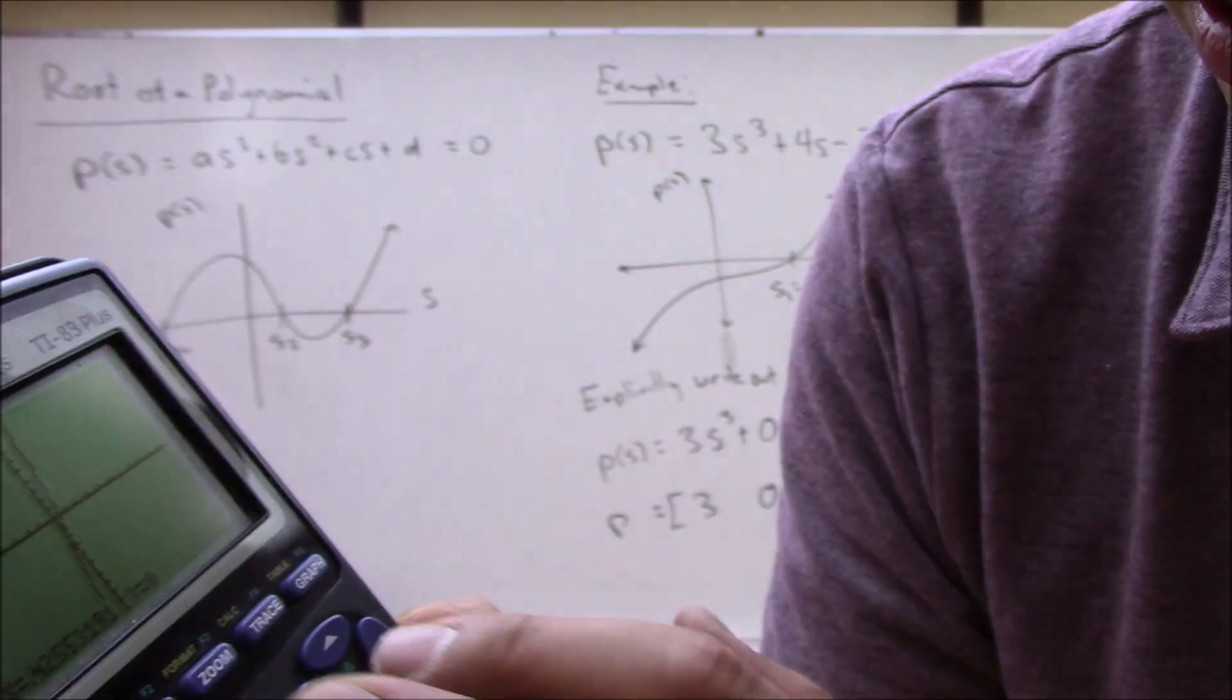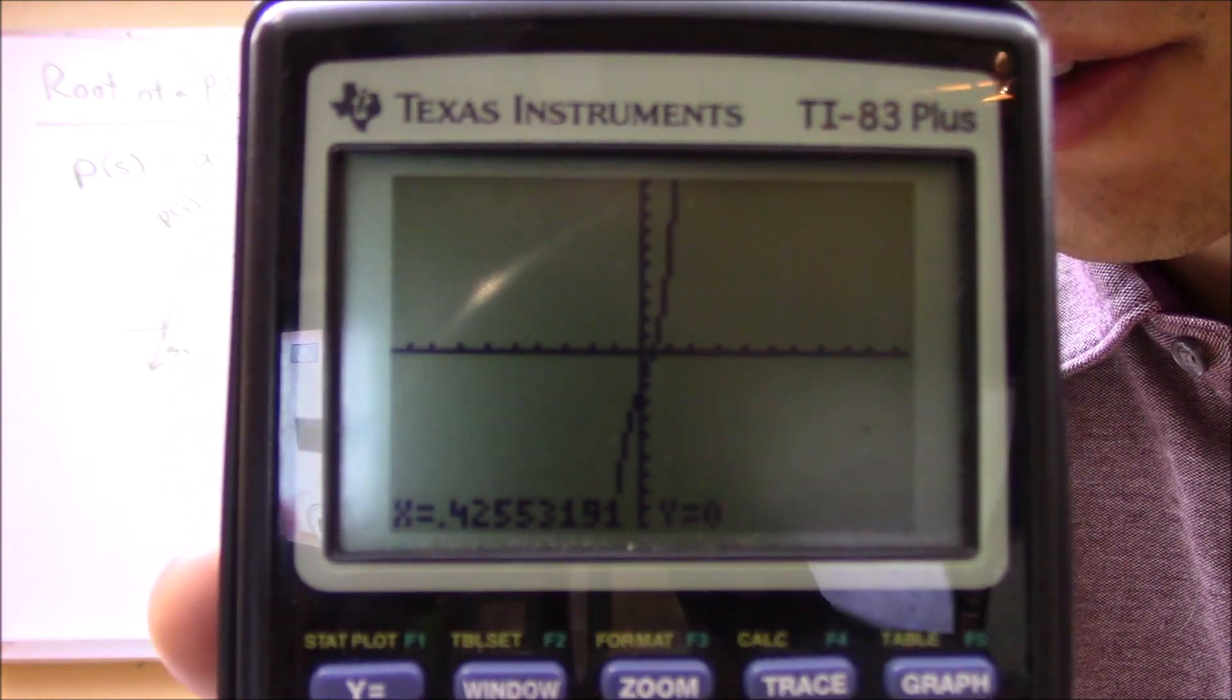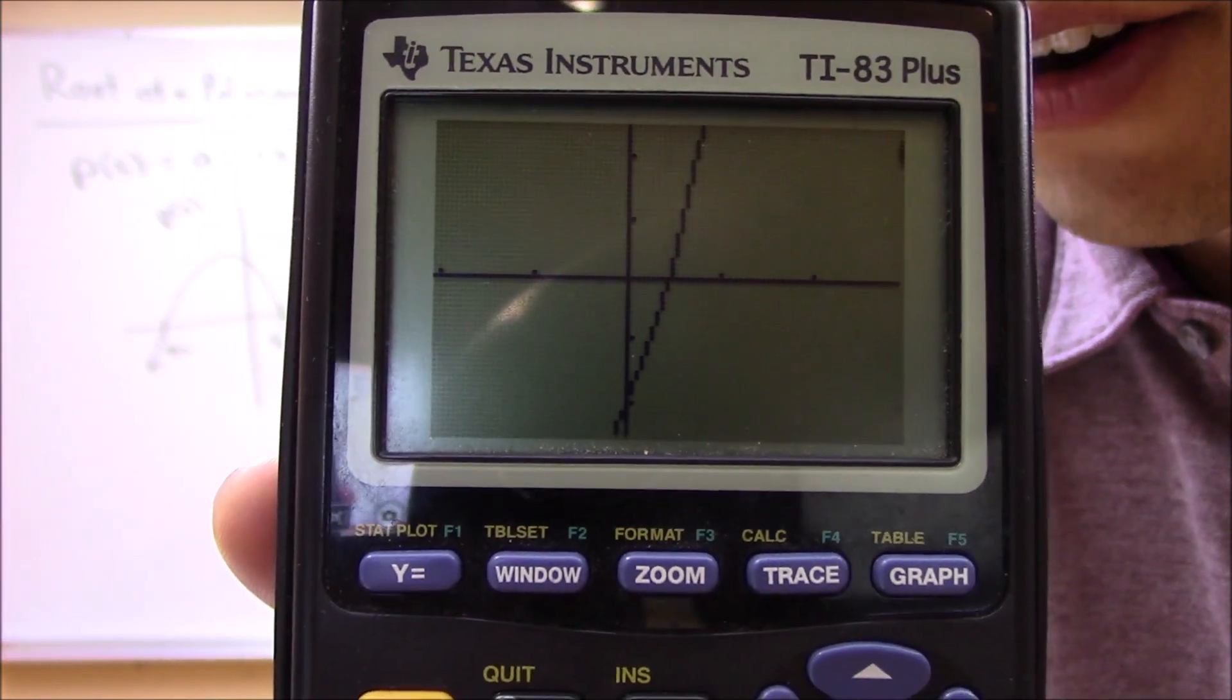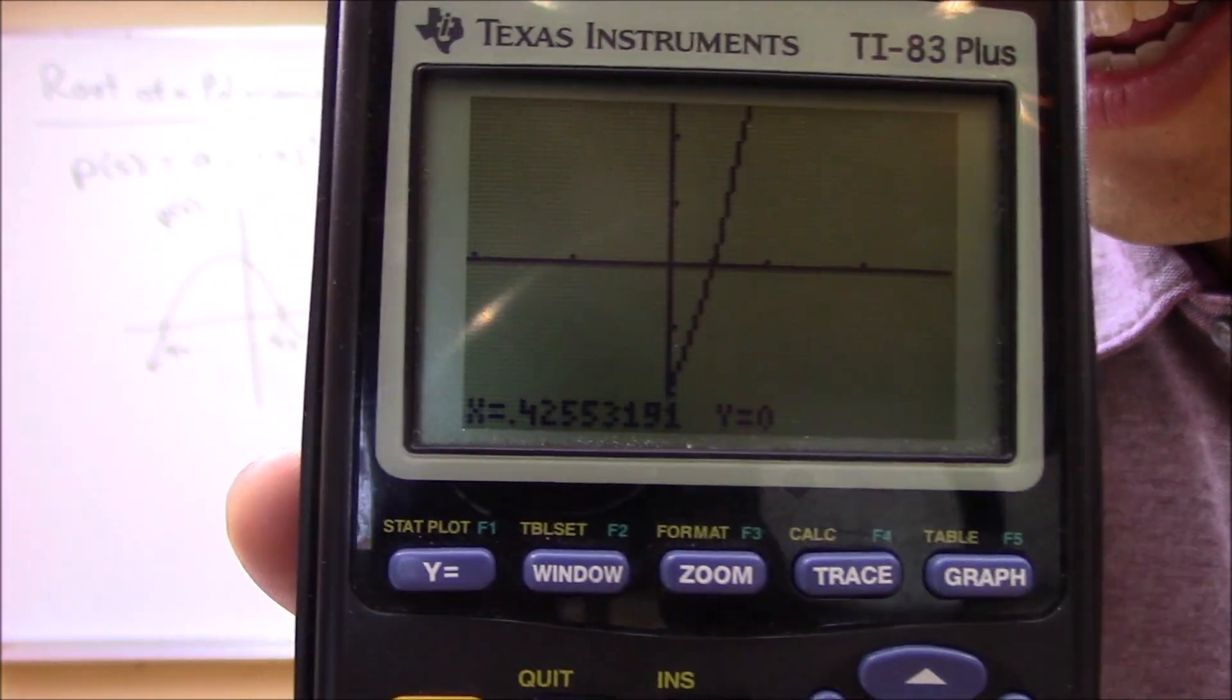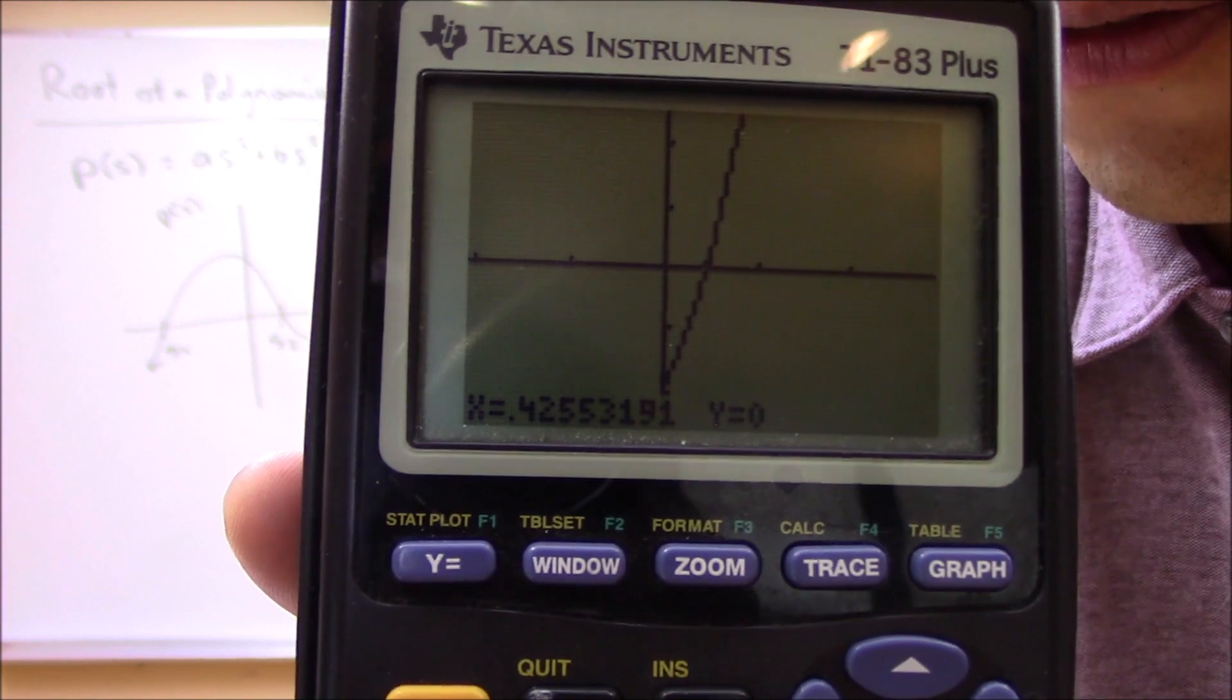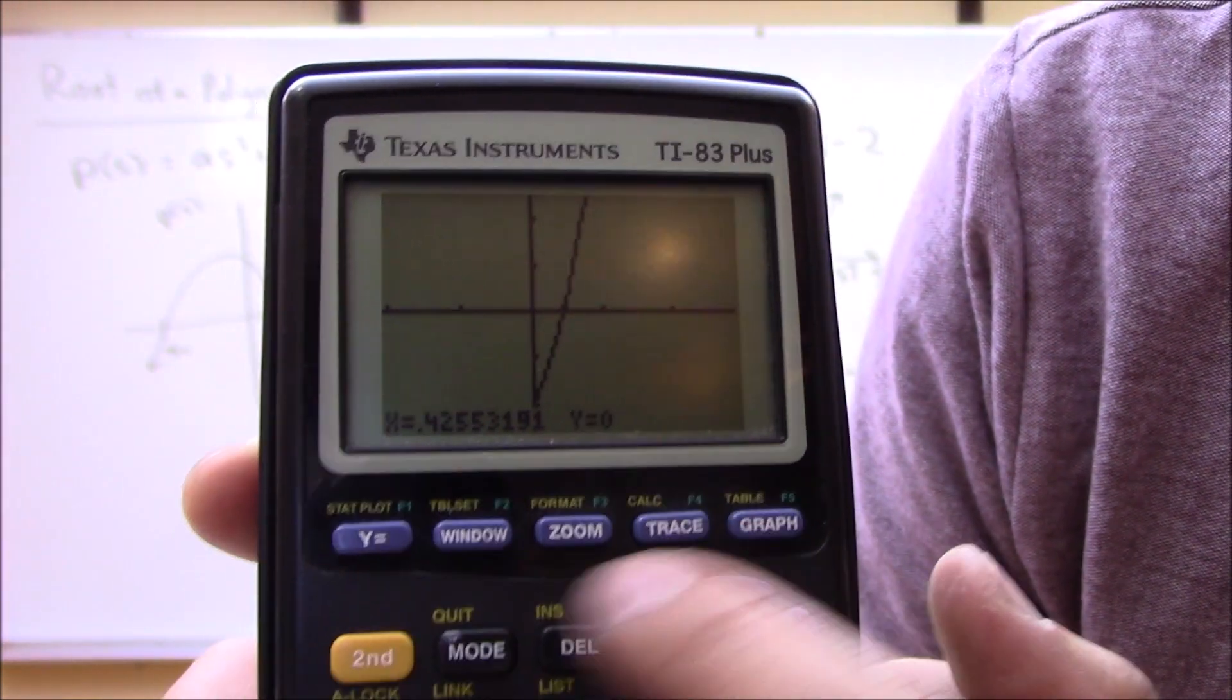So I'm going to say zoom and then I'm going to hit enter to go zoom in. Zoom, go down to 2 and then hit enter, zoom in, and I'll zoom in right here in the middle. So I'll push enter one more time and it's going to zoom in. There it is, so you can kind of see that yeah, there's definitely a root there around 0.4ish.